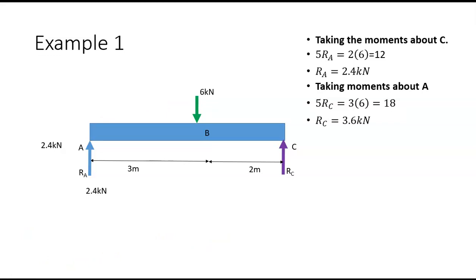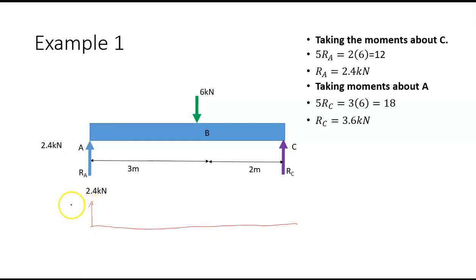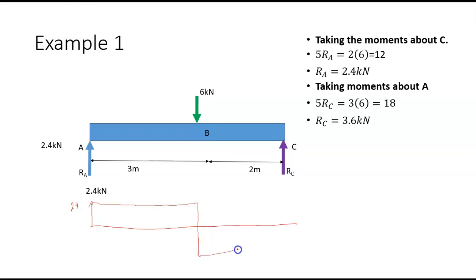That gives us our shear force values. If we draw the shear force diagram, at point A we have a force of 2.4 kilonewtons, which carries across, then jumps by the six kilonewton load down to 3.6. I'll show how we get that now.